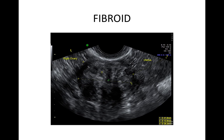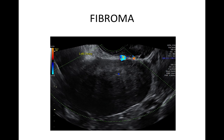This was a pedunculated fibroid. It is a regular solid mass with shadowing and minor vascularity. You need to look to see whether you can see the ovary separately and whether the mass moves separately from the uterus and ovary on pressure, and whether you can see a vascular connection between uterus and fibroid. A fibroma is a regular solid mass with some shadowing and minor vascularity, and can be mistaken for a fibroid.